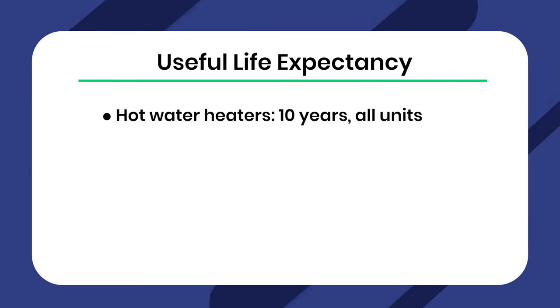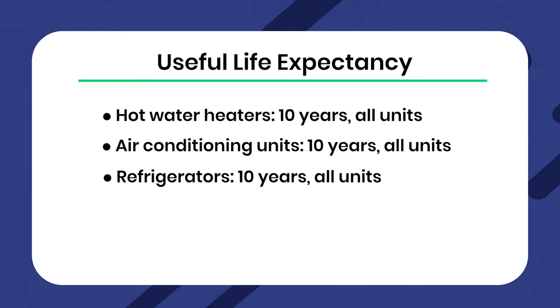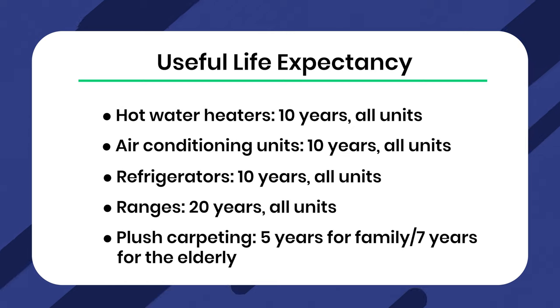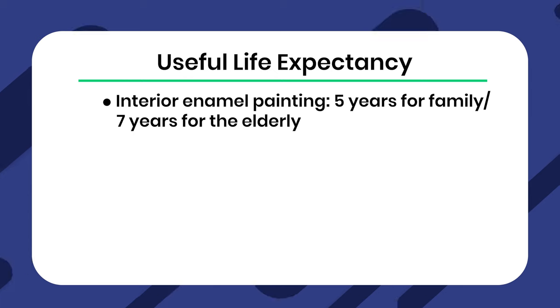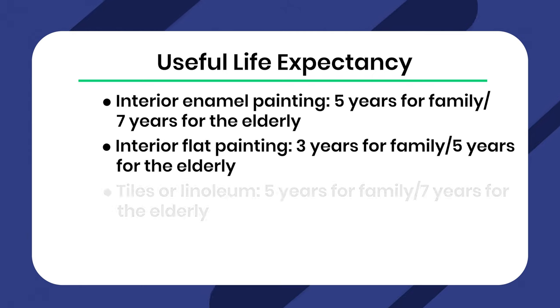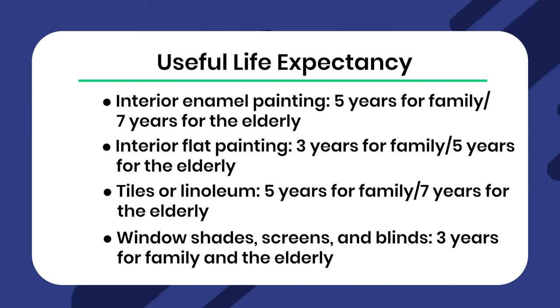The documentation also lays out the useful life expectancy of various appliances proportional to the tenant's age. Examples include: hot water heaters — 10 years all units; air conditioning units — 10 years all units; refrigerators — 10 years all units; ranges — 20 years all units; plush carpeting — 5 years for family and 7 years for the elderly; interior enamel painting — 5 years for family and 7 years for the elderly; interior flat painting — 3 years for family and 5 years for the elderly; tiles or linoleum — 5 years for family and 7 years for the elderly; window shades, screens, and blinds — 3 years for family and the elderly.